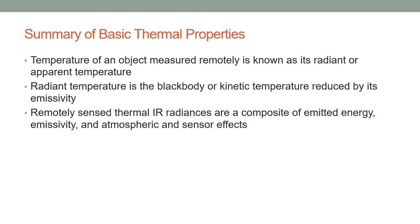In summary: the temperature of an object measured remotely is known as its radiant or apparent temperature. Radiant temperature is the black body or kinetic temperature reduced by its emissivity — if the emissivity is less than one, the measured radiant temperature will be lower. Remotely sensed thermal infrared radiances are therefore a combination of the emitted energy, the emissivity of the surface, and the atmospheric effects as the infrared travels through the atmosphere, plus the sensor characteristics themselves.